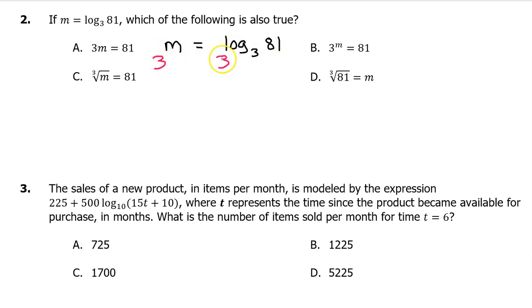On the right-hand side, the base 3 and the log base 3 cancel each other out, leaving behind the 81. On the left side, we still have 3 to the M power. This is a perfect match for option B.